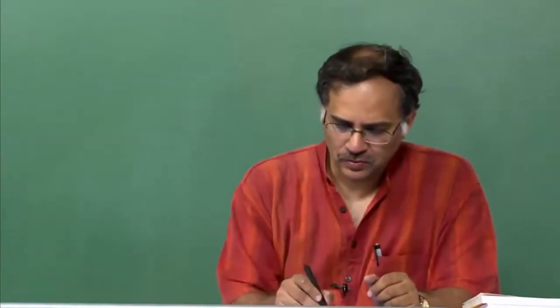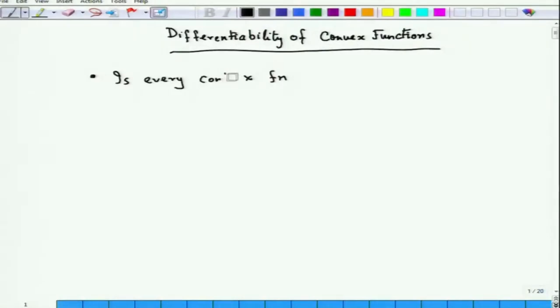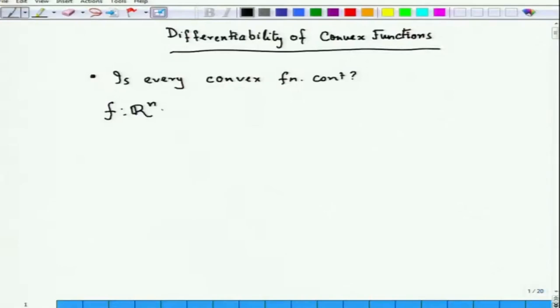The first question is whether every convex function is differentiable, or whether it is even continuous. Is every convex function continuous? We know that if a function is not continuous, it is not differentiable. The answer is surprisingly nice: if you take a function from R^n to R and f is convex, then f is continuous.